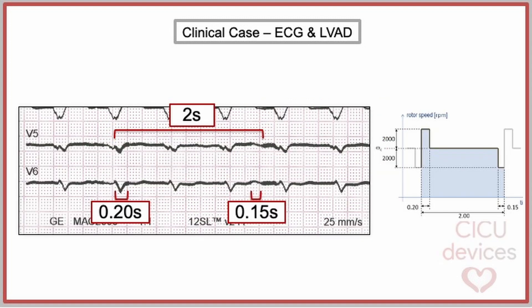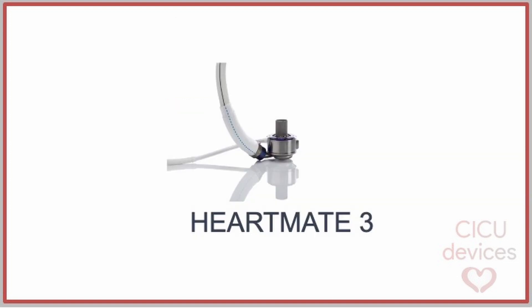These cycles correspond to the artificial pulse generated by the HeartMate 3 system. Every 2 seconds, the system reduces the speed by 2000 revolutions per minute for 150 ms, and then increases it by 2000 revolutions per minute above the baseline for 200 ms. These changes produce the artifacts described in the previous ECG, and the HeartMate 3 is the only LVAD nowadays that generates this artificial pulse. Therefore, if we detect this pattern in an ECG of a patient with an LVAD, we can determine that it is a HeartMate 3.